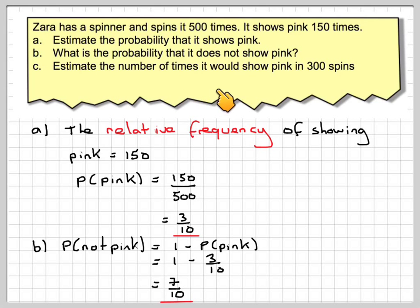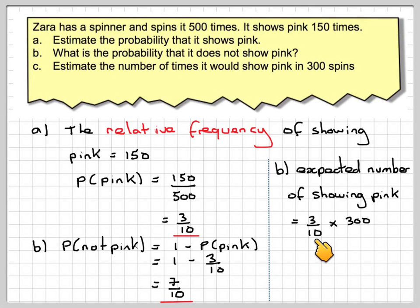Estimate the number of times it would show pink in 300 spins. We know the probability, the estimated probability of showing pink is 3 out of 10. And it's 300 times. So the expected number of showing pink will be the probability, which is 3 tenths times the 300 spins. 10s go into that once and into that 30 times. So it's 3 times 30, which is 90 times.